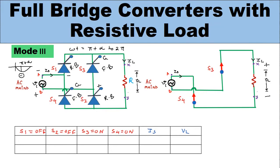In Mode 3, as the load current flows through S4 and returns to the source, the source current direction is opposite to the load current direction. Therefore, source current = −IL. The load voltage equals the input signal voltage. S1 and S2 are off so their currents are zero. Since S3 and S4 are in series with the load, the current through SCR3 = IL and the current through SCR4 = IL.